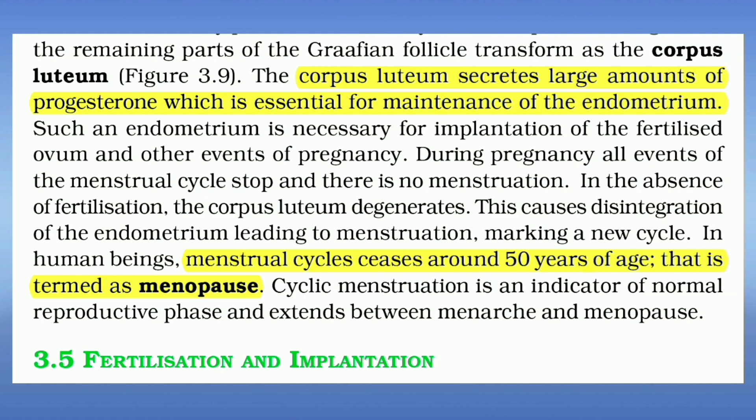The corpus luteum secretes large amounts of progesterone, which is essential for maintenance of the endometrium. The menstrual cycle ceases around 50 years of age, which is termed as menopause.